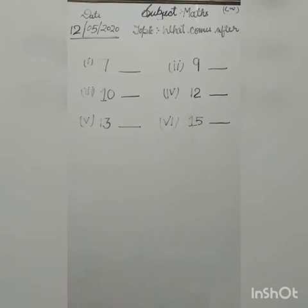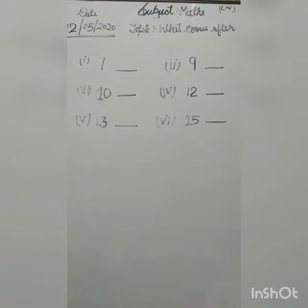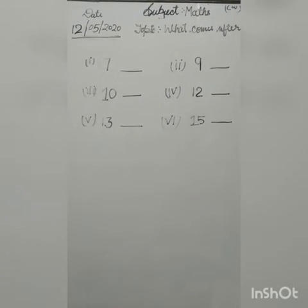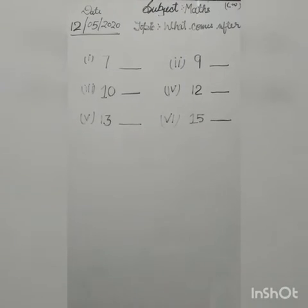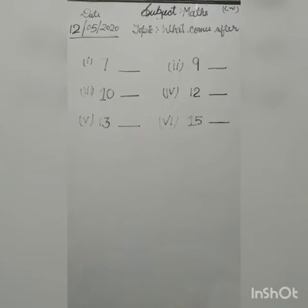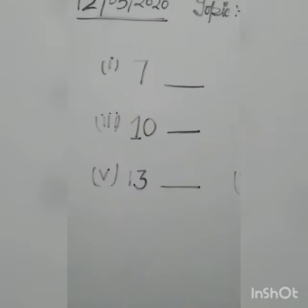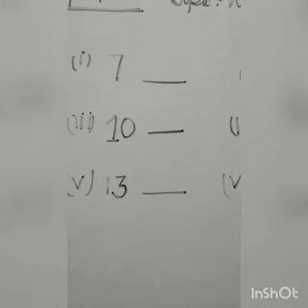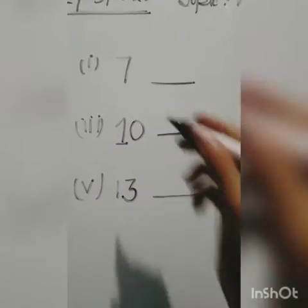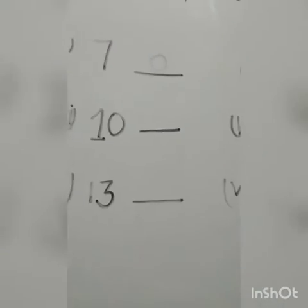First you have to note down your date 12-05-2020, topic what comes after, classwork. The first one is 7 — what comes after 7? Counting 1, 2, 3, 4, 5, 6, 7, 8. After 7 we will write here 8.